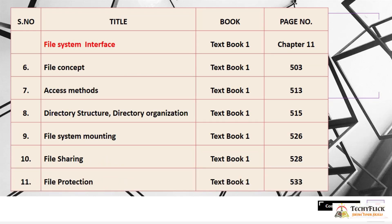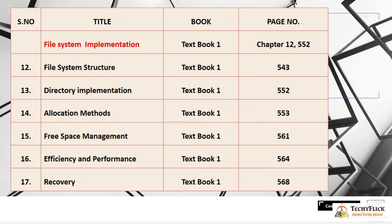The second subtopic is File System Interface, Chapter 11, starting at page 526. This includes File Sharing at page 528 and File Protection at page 533. The third subtopic is File System Implementation, which covers File System Structure at page 543.